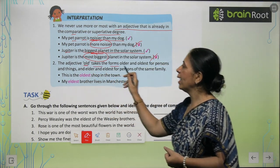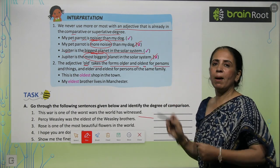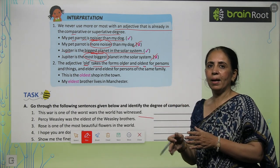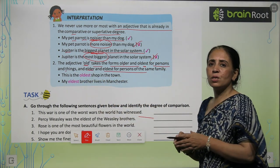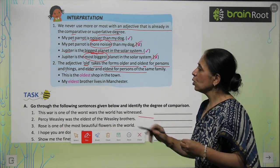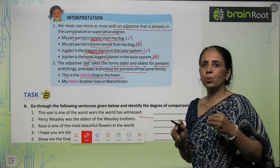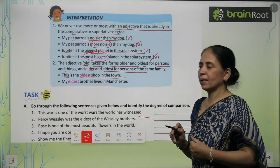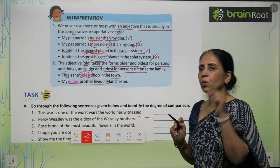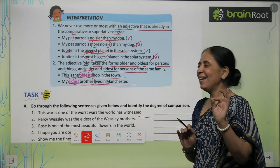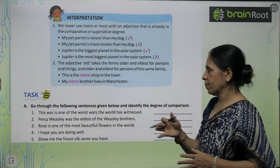The adjective 'old' takes the forms 'older' and 'oldest' when talking about human beings in general. But for members of the family, we use 'elder' and 'eldest.' For example: 'This is the oldest shop of the town' — here we use 'oldest.' But for family: 'My eldest brother lives in Manchester' — here we use 'eldest.'